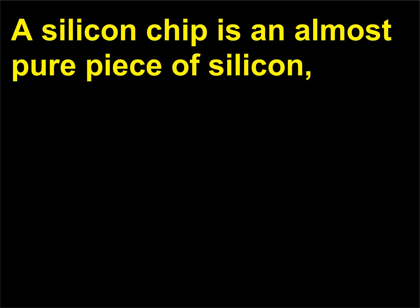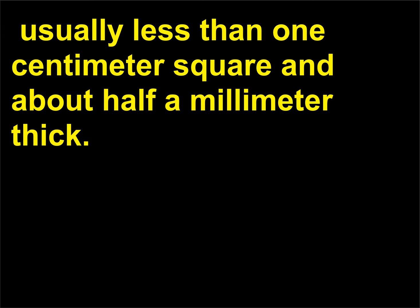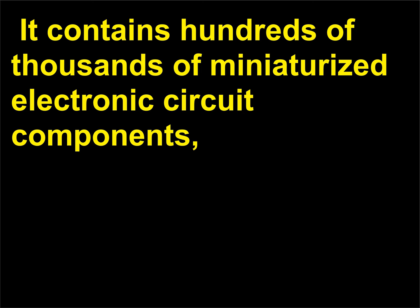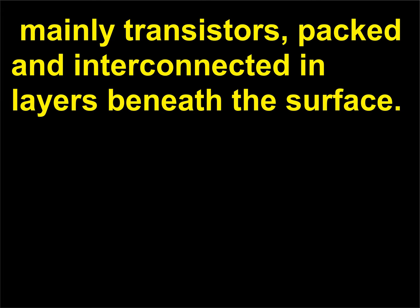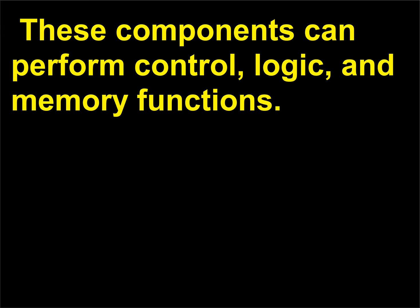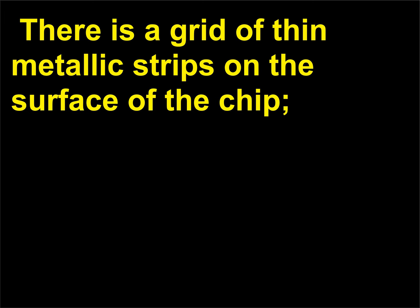What is a silicon chip? A silicon chip is an almost pure piece of silicon, usually less than 1 centimeter square and about half a millimeter thick. It contains hundreds of thousands of miniaturized electronic circuit components, mainly transistors, packed and interconnected in layers beneath the surface. These components can perform control, logic, and memory functions. There is a grid of thin metallic strips on the surface of the chip used for electrical connections to other devices.